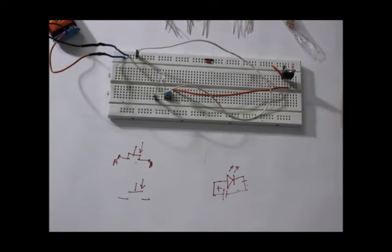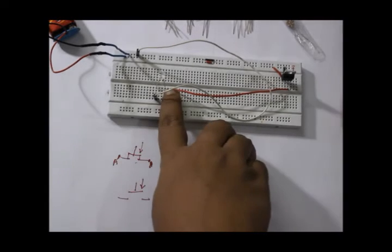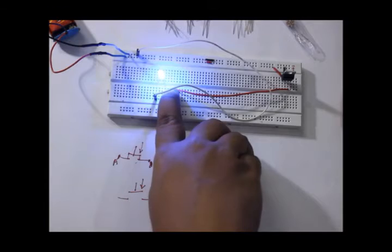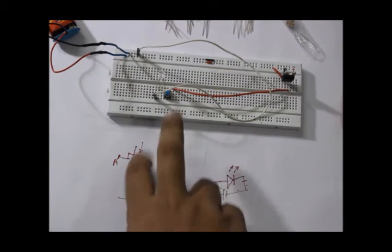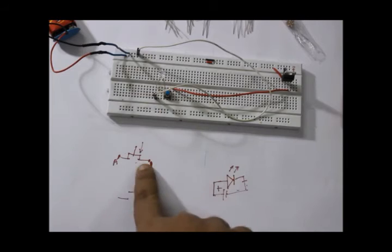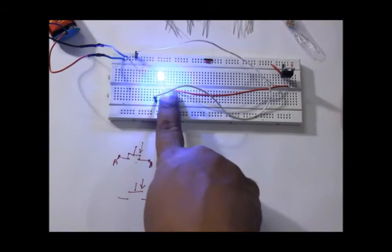But the LED is not glowing till now because this circuit is in the open position. Now if I press this button - look, the LED is glowing. That means the circuit is in this closed position when I am pressing this button.